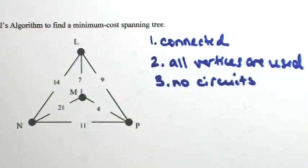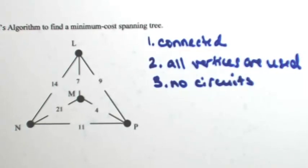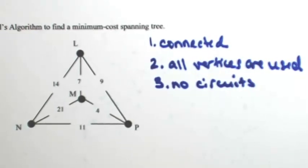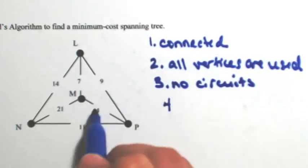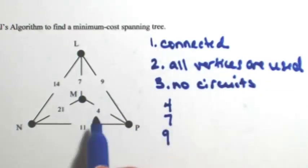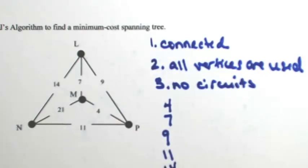So in using Kruskal's algorithm, it's kind of like a sort of edges algorithm in the fact that we have to sort the edges first. So I'm just going to list them out in numerical order. So I got my 4, then a 7, and then a 9, 11, 14, 21.